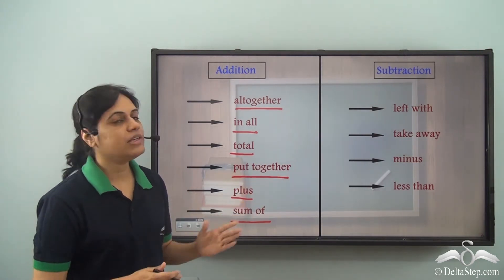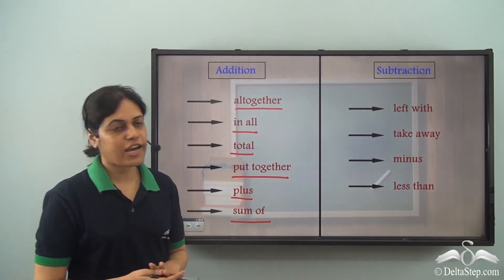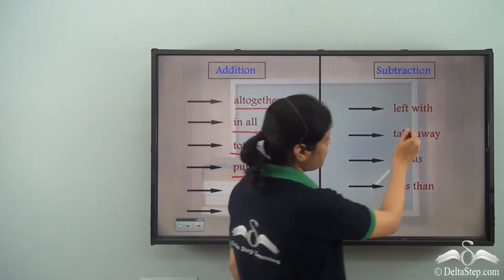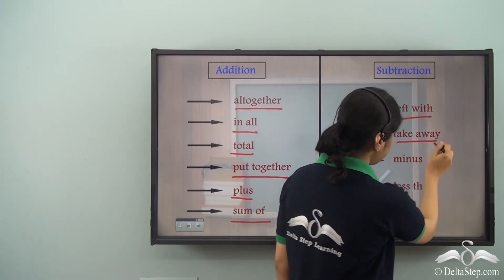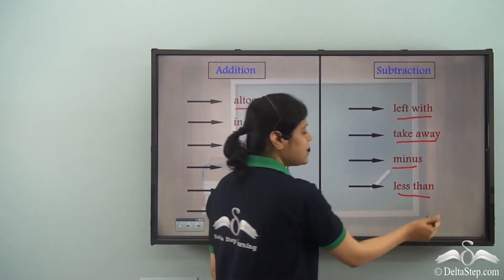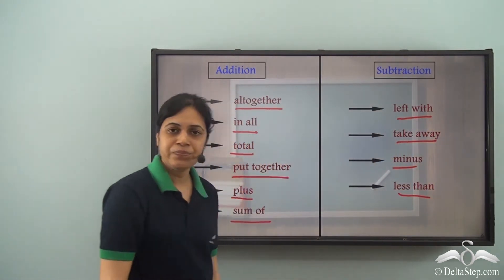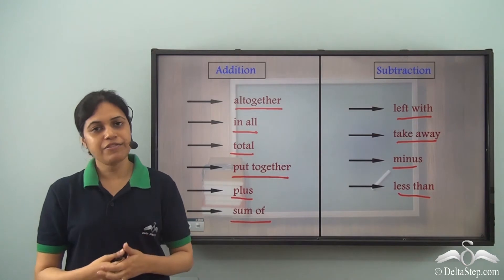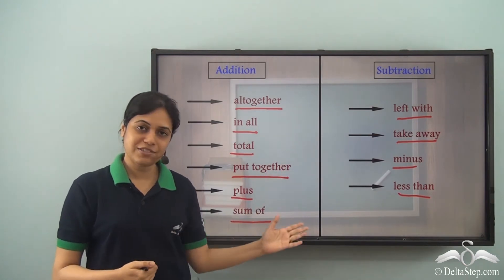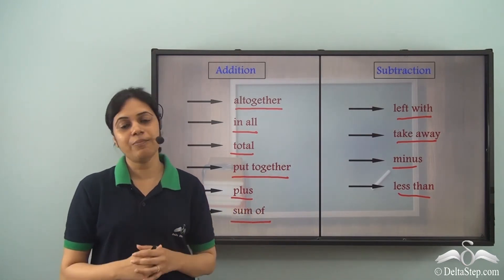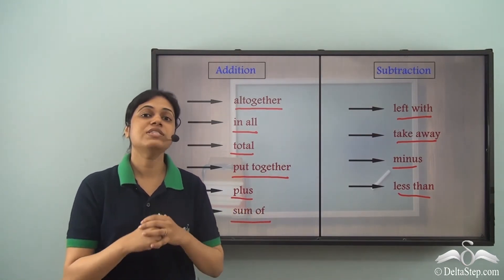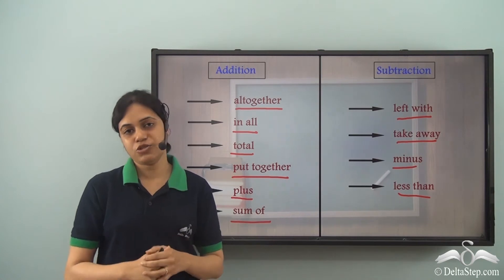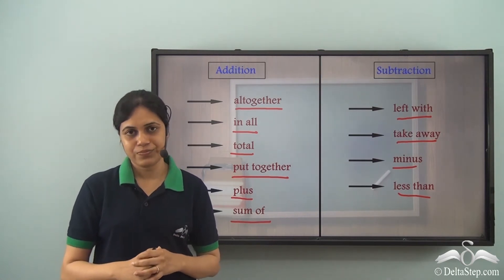Similarly, for subtraction we have: left with, take away, minus, less than. So whenever you see these terms in a problem, you need to subtract the two numbers.